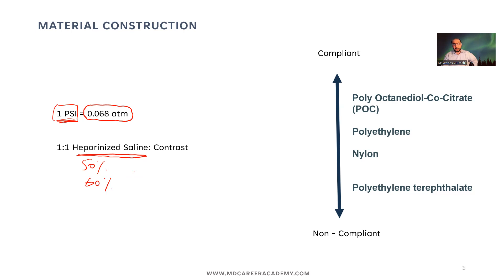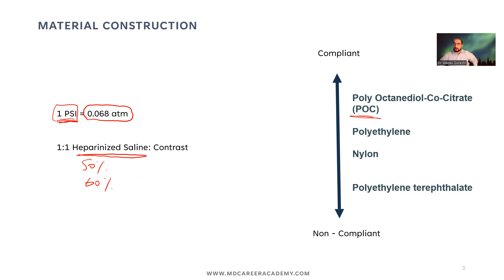Compliance is a characteristic of the material that the balloon is made of. Polyoctanidoyl co-citrate (POC) is the most compliant material, followed by polyethylene and nylon. The non-compliant balloons are made of polyethylene terephthalate (PET).